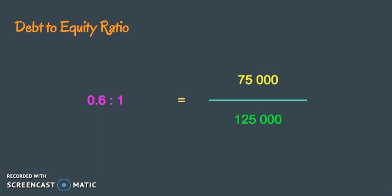What this means is that the firm has $0.60 in external debt or liabilities for every $1 of owner's equity. A ratio of 1 to 1 indicates a sound financial position, so this company is in a safe position.